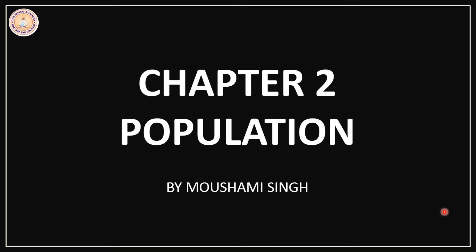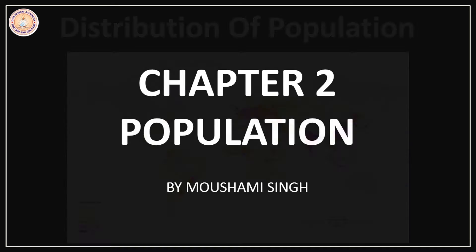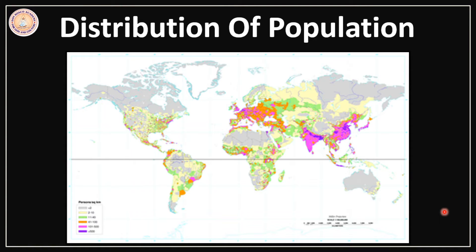We learnt that human beings are an important resource and their existence is of immense importance to the earth, their existence cannot be undermined. Today we are going to learn about the distribution of population and we will be learning it and seeing where there is a concentration and where there is a scattering, what is the trend of the scattering and concentration. And this map will tell us where exactly we are having a very high concentration and it will explain where we have very low population.